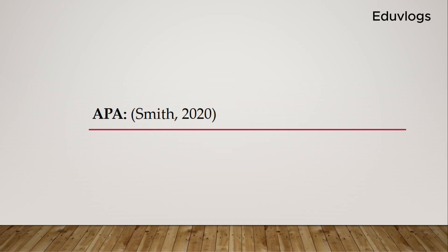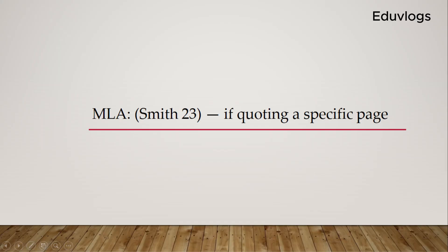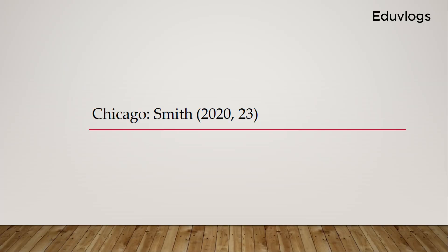Now we are moving on to in-text citation. In-text citation explains how to cite a book within the text. If you are citing a book within your text and you are using the APA style, all you need to do is write the surname and the year. If you are using the MLA style, all you need to do is write the surname and then quote the specific page. If you are using the Chicago style for in-text citation, write the surname of the author, the year of publication, and the page.